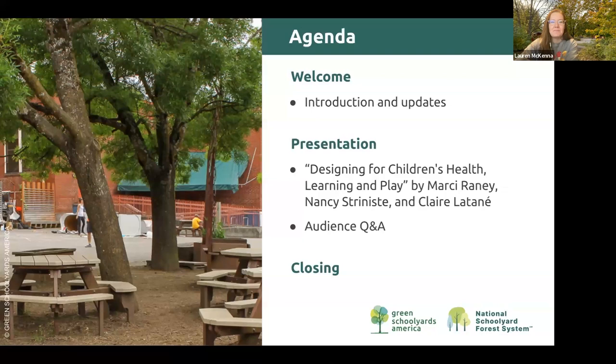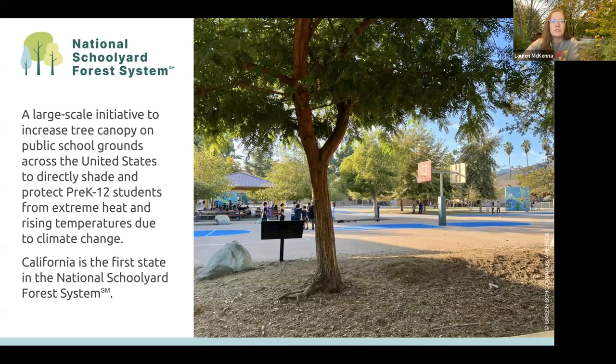This series is part of the National Schoolyard Forest System, a large-scale initiative to increase tree canopy on public school grounds across the United States to directly shade and protect pre-K through 12th grade students from extreme heat and rising temperatures due to climate change. California is the first state in this initiative, founded by Green Schoolyards America and 10 Strands in partnership with CAL FIRE and the California Department of Education.